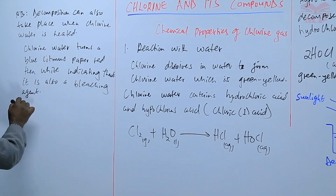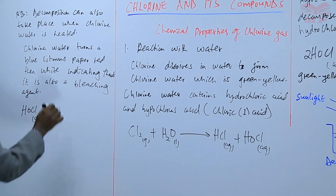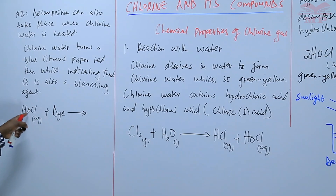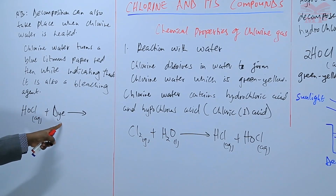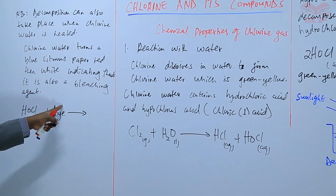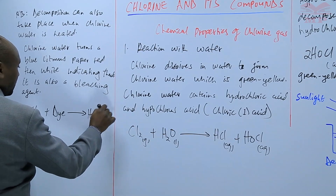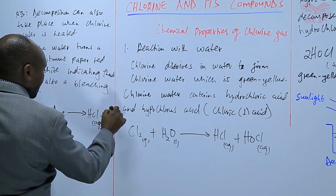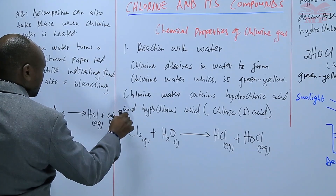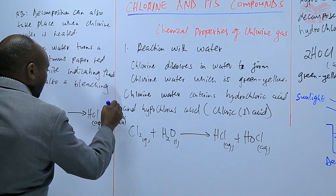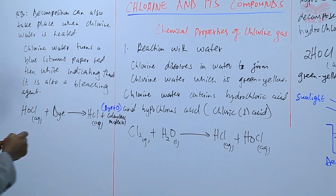The hypochlorous acid, once it combines with the dye of the litmus paper, decomposes to lose the oxygen atom — what we call the nascent oxygen. That oxygen reacts with the dye to form a colorless material. So we can say that chlorine bleaches by oxidizing the dye. We form HCl plus a colorless material, which is the result of the dye combining with the oxygen.